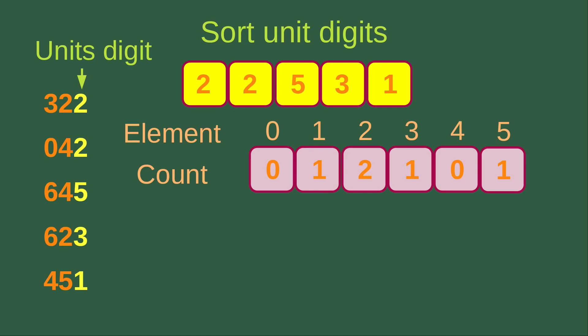Now we can see that for 2, 5, 3, and 1, we can simply find out the number of counts for each of these digits. For number 1, we have 1. For number 2, we have 2 twos. For number 3, we have 1. And we have no 4s. And we have 1 five. So the number of counts for each of the digits is simply shown here.